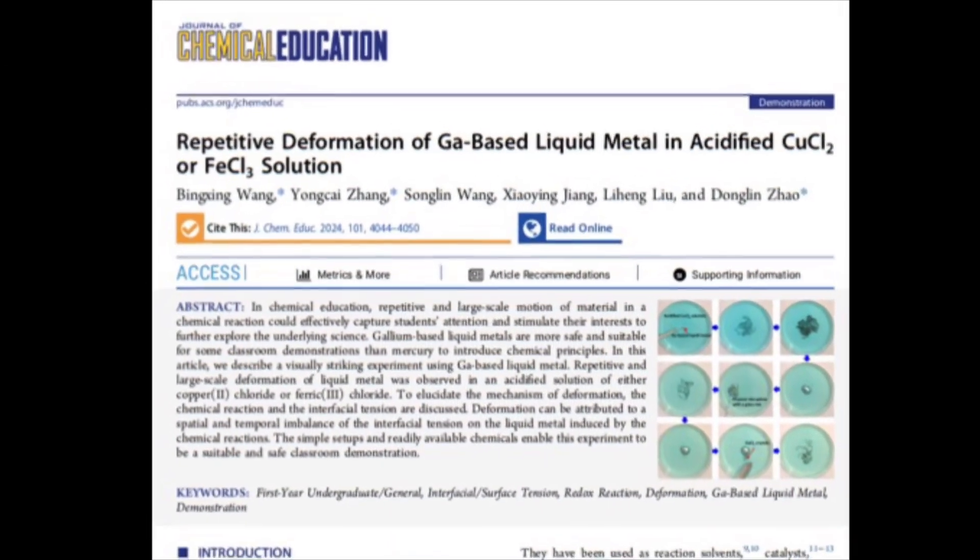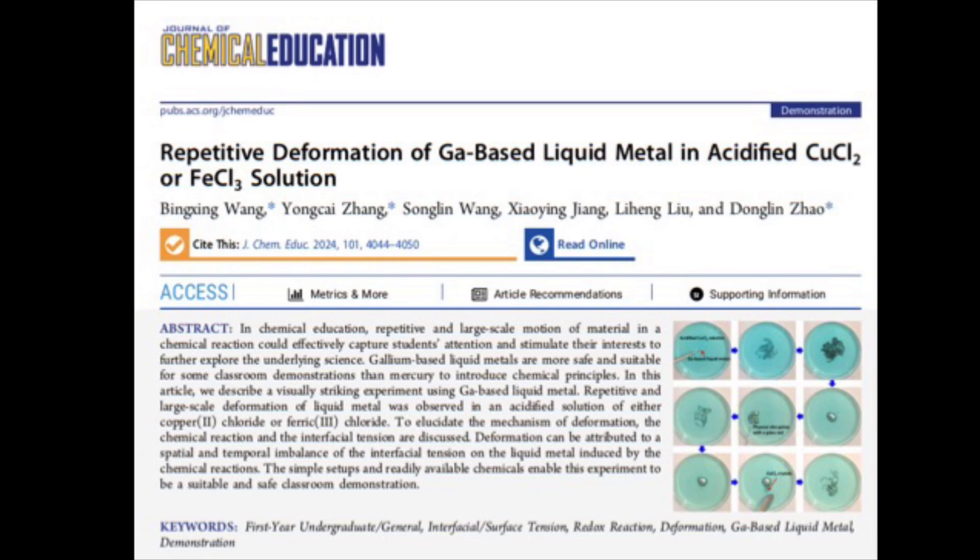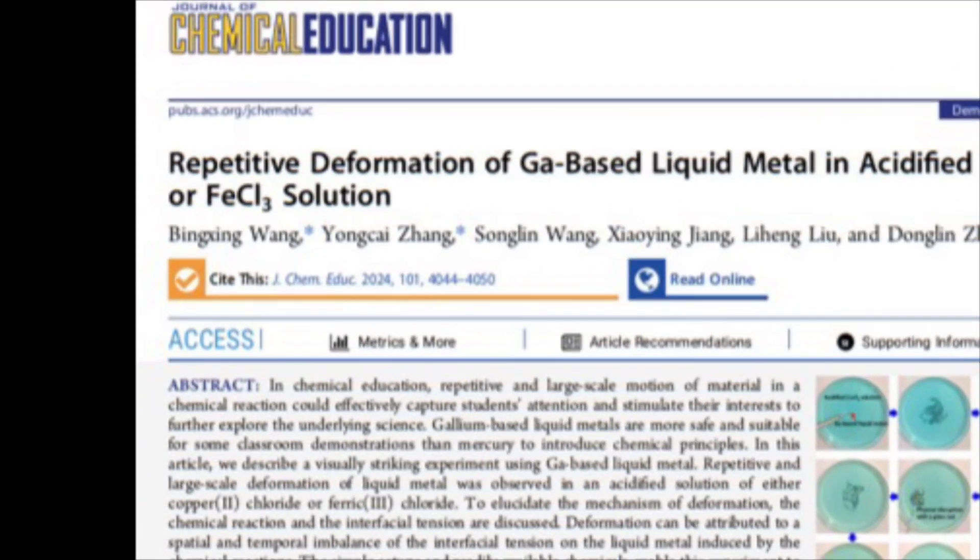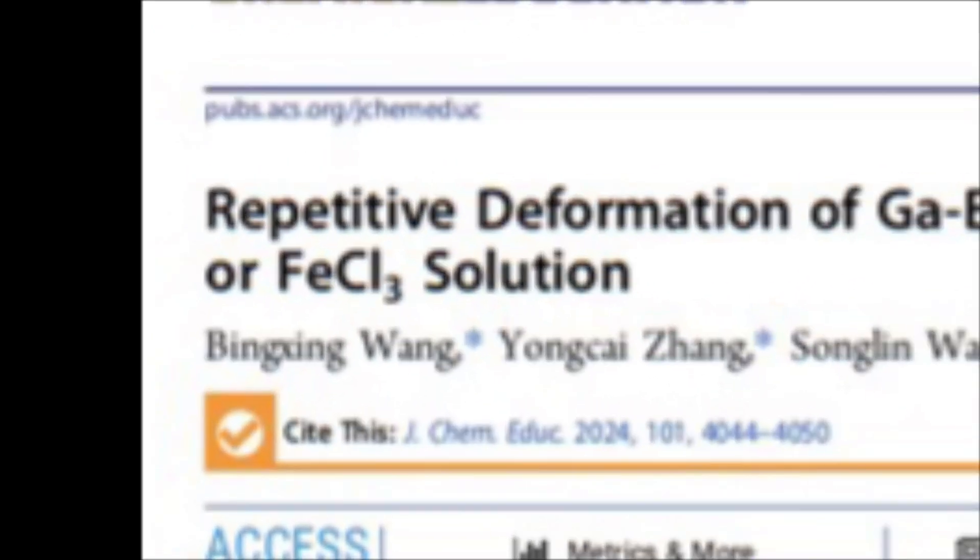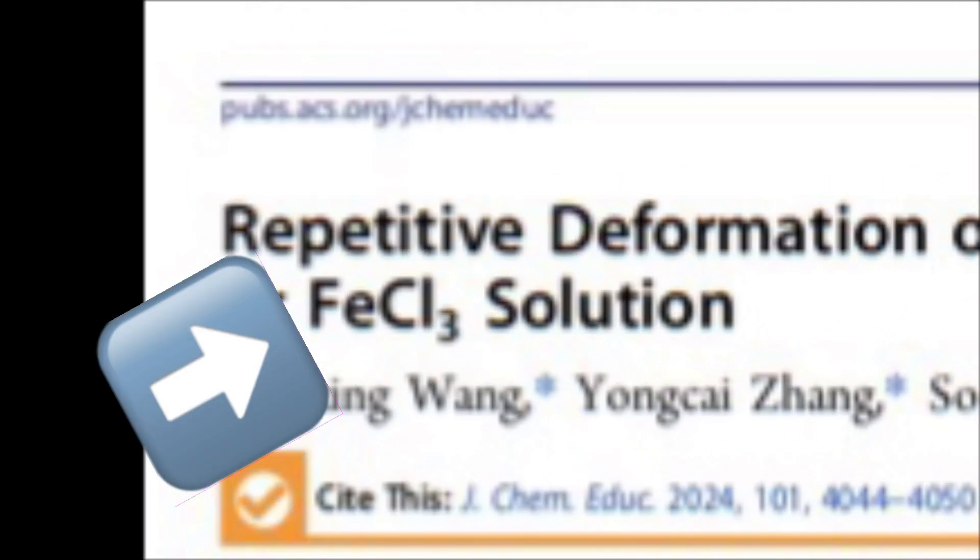Anyway, I learned how to get Galenstan to react with copper ions by reading this article in the Journal of Chemical Education. But this article also describes how to do the same type of thing by putting Galenstan in a solution of iron-3 ions. So of course, I wanted to see if I could get this experiment to work too.